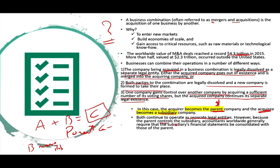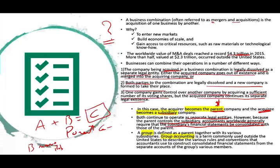However, because the parent company controls the subsidiary, accountants worldwide generally require that the subsidiary's financial statements must be consolidated with those of the parent. Although they operate separately — with separate cash management, stores, and internal controls — when Old Navy reports their financial statements they get consolidated with the Gap Store, and so does Banana Republic. The term in the international arena is called a 'group' — a parent together with its various subsidiaries. In the U.S. we use the word consolidation.